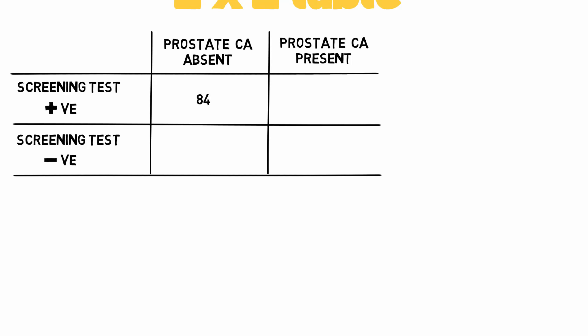Imagine 84 patients where the screening test says positive for prostate cancer, but prostate cancer is actually absent — this works out as a false positive. Then 39 patients where the screening test is positive for prostate cancer, and they actually do have prostate cancer — so this is a true positive.